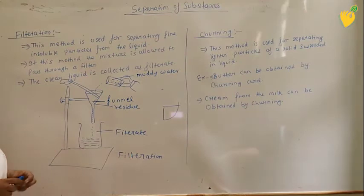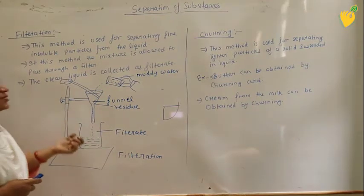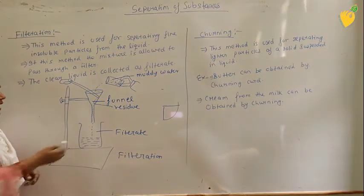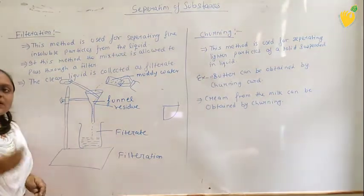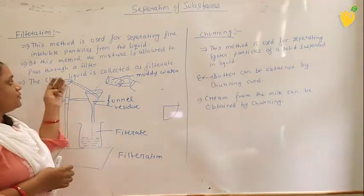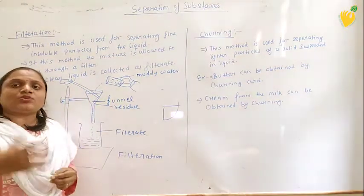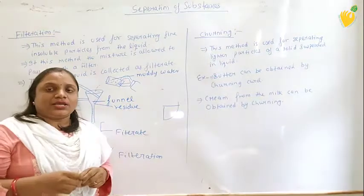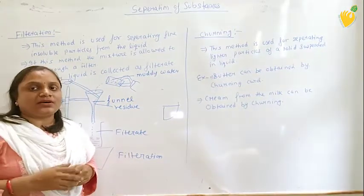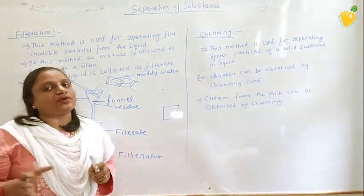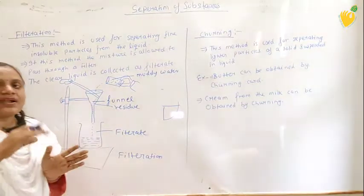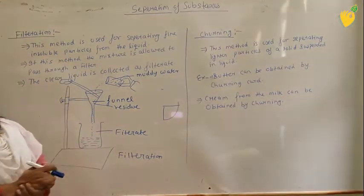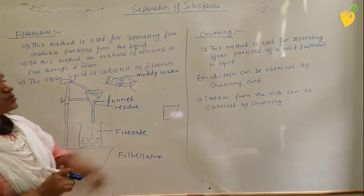You can do this process at your home also using a conical funnel and a beaker. Other examples of mixtures of insoluble solid and liquid are mud water and sand water. Sand is insoluble in water, so the mixture of sand and water can also be separated by the process of filtration.